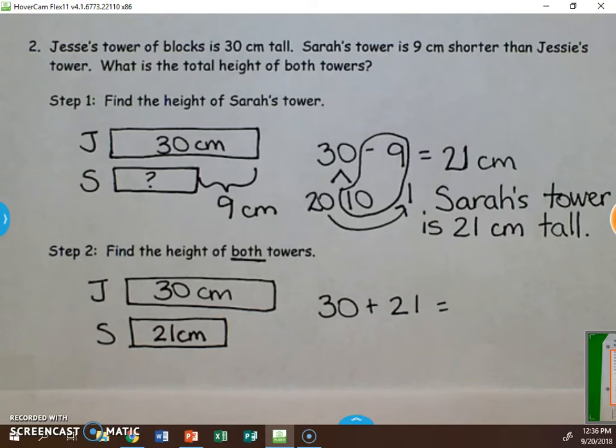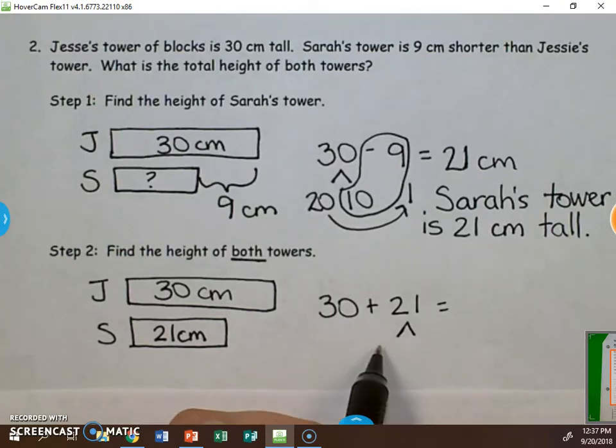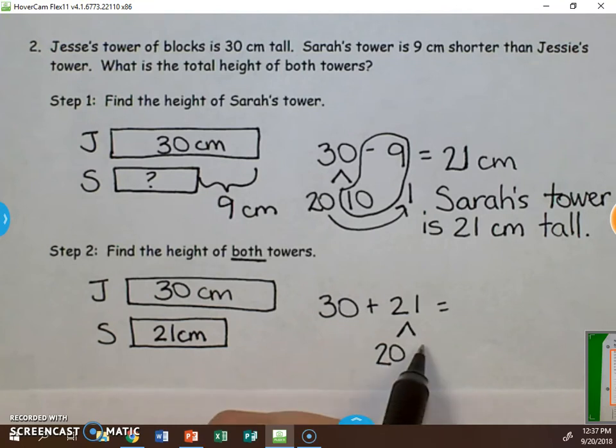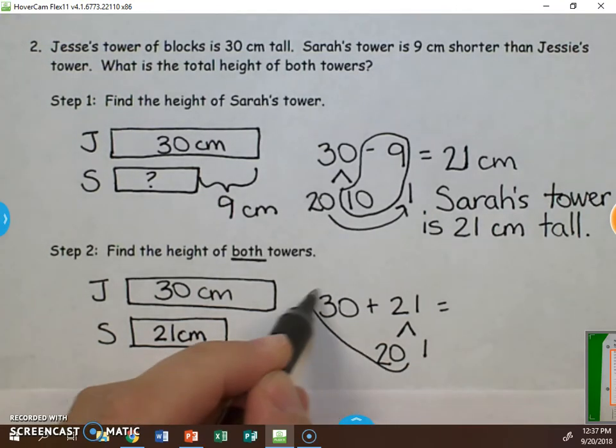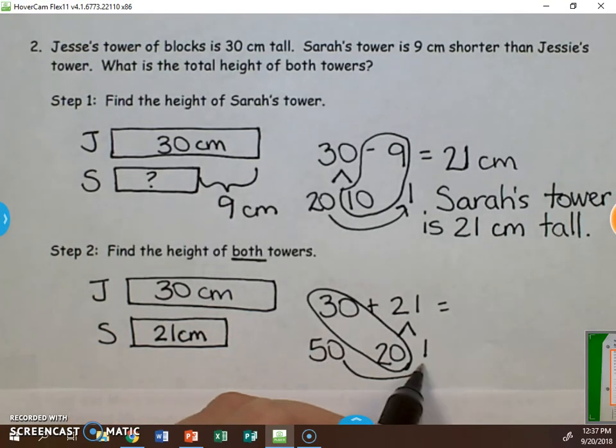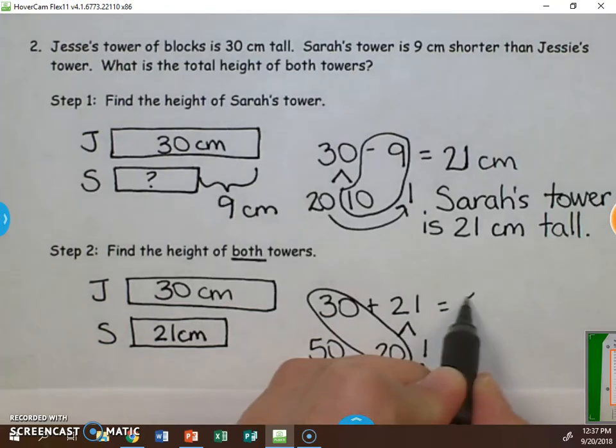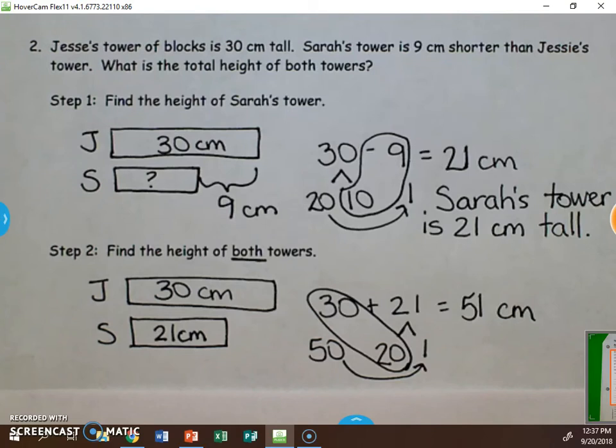Once again, there are different methods that we could use to solve this. We could look at counting up from 30 and adding 21 to it. Or we could draw a picture. But I'm also going to decompose this to make it easy. I'm going to decompose it into tens and ones. I then want to add together the tens. 30 plus 20 is 50. And 50 plus 1 is 51.